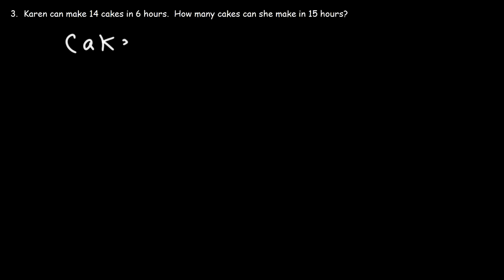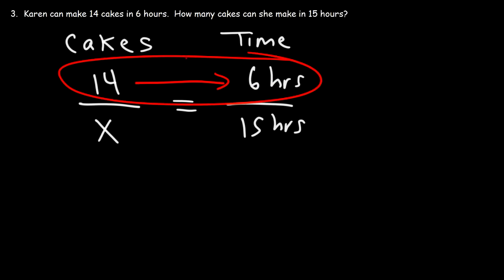There's two things that we're dealing with. The number of cakes that she can make and the time in which she can make them. So once again, let's put two fractions separated by an equal sign. So she can make 14 cakes in 6 hours. So how many cakes, which means x, that's what we're trying to solve for, can she make in 15 hours? So all of the information associated with time is on the right side, and the information associated with cakes is on the left side. And since 14 cakes correspond to 6 hours, these two things are on the top of the fraction. The other stuff has to be on the bottom.